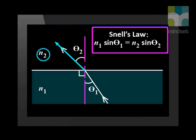Now let us look at the refracted ray. N2 is the refractive index of the second medium. And theta 2 is the angle between the refracted ray and the normal, the angle of refraction.